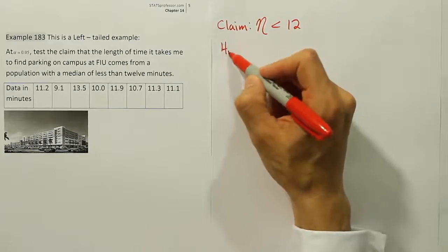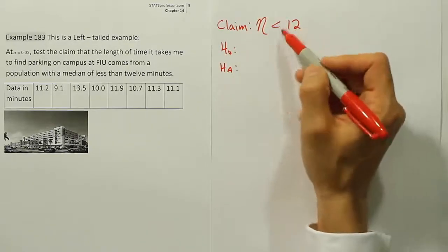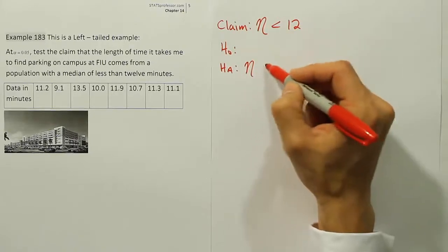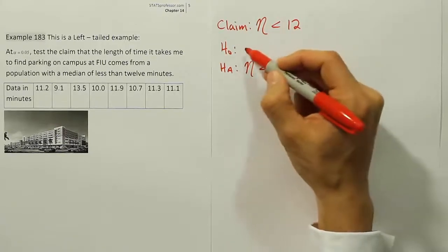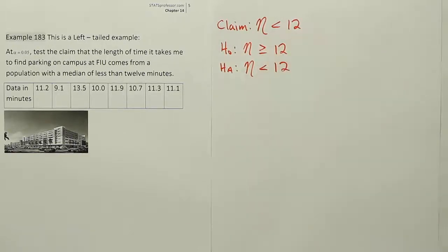From there, I'm going to do my H0 and HA, same as I always do. Looking at the symbol and the claim, I can see that HA and the claim are the same in this case, and H0 is going to express the idea of greater than or equal to that number. So greater than or equal to 12.